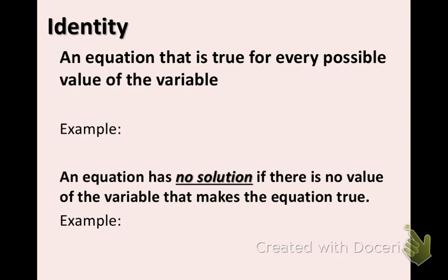A couple vocab terms. Identity is an equation that is true for every possible value of the variable. So an example of this would be x plus 1 equals x plus 1. It is the same thing on both sides. And an identity works when you can plug in any number for the variable and it proves true.